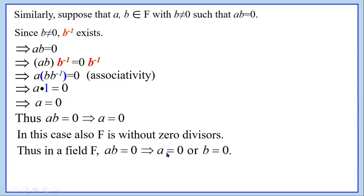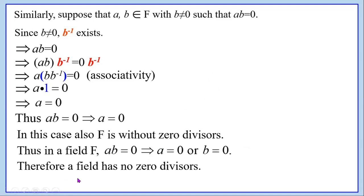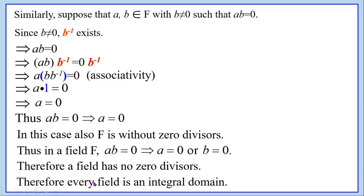Thus, in field f, a·b = 0 implies either a = 0 or b = 0. In case one, we showed b = 0. In case two, we assumed a·b = 0 and showed a = 0. Therefore, combining both cases, in a field if a·b = 0 then a = 0 or b = 0. Therefore, we say that a field has no zero divisors, and hence every field is an integral domain.